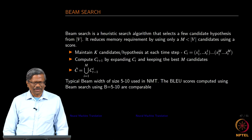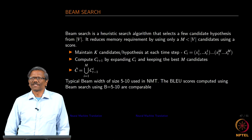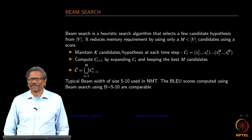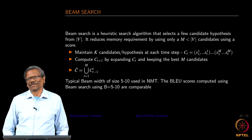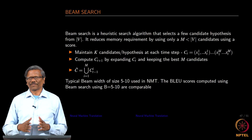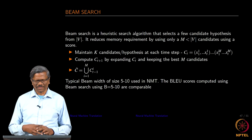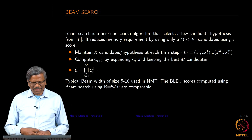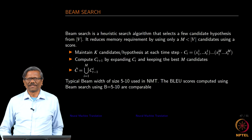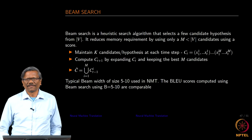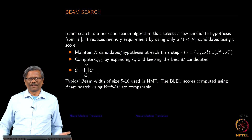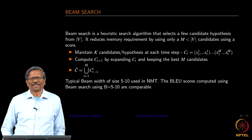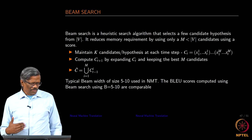In this session, we are going to be talking about beam search. I am sure you heard about this several times during our neural machine translation sessions. We did not elaborate on this earlier, so now we are going to talk a little bit about what beam search is all about. This is a heuristic search algorithm that selects a few candidate hypotheses from a set of hypotheses. So, why is this required?